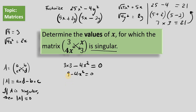In a similar way, we can rewrite 9 minus 4x squared as: the square root of 9 is 3, and the square root of 4x squared is 2x. So we can write this as (3 plus 2x)(3 minus 2x), and that expression is equal to 0, because this is a singular matrix and this part is the determinant.